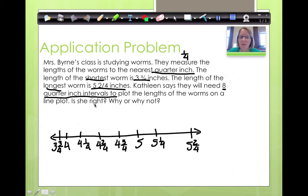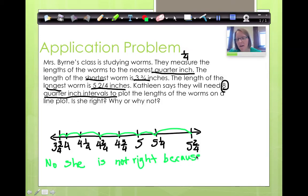Now we have to count the intervals to see if there's 8. We're going to do green. Let's count the intervals. This is where we started. 1, 2, 3, 4, 5, 6, 7. Is she right? No, she is not right. Because how many intervals do they need? Because they needed 7 intervals, not 8.